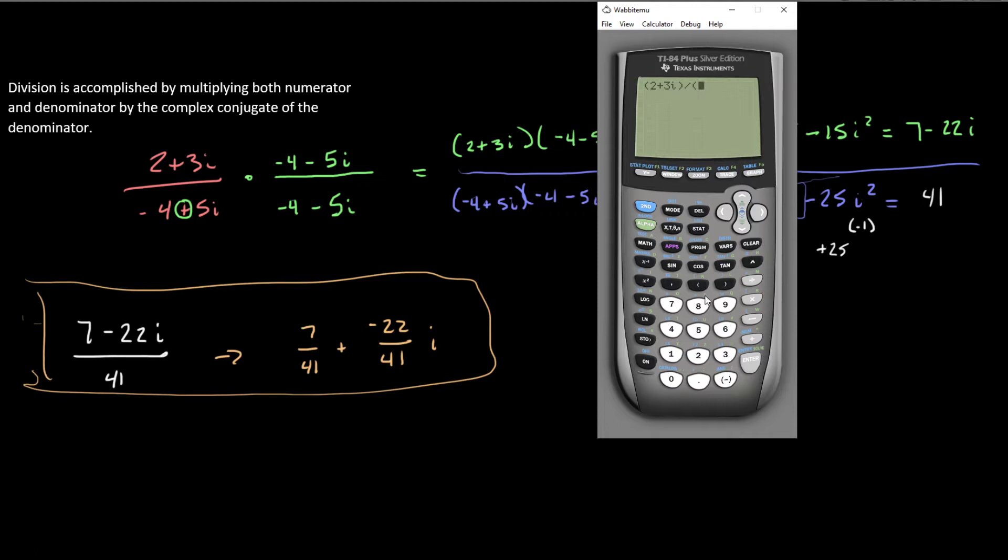Divided by, and in parentheses, I'm going to put negative. Remember that negative is below the 3. It's not one of the operator buttons. Negative 4 plus 5. And then that second decimal point for the i again. Now, in order to give the true answer out of here, I am going to have to go into my mode,